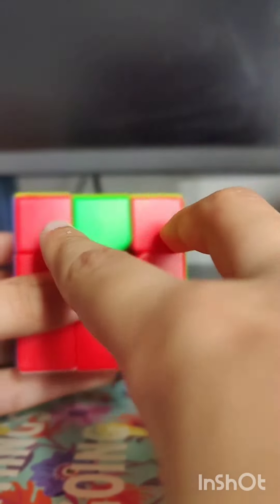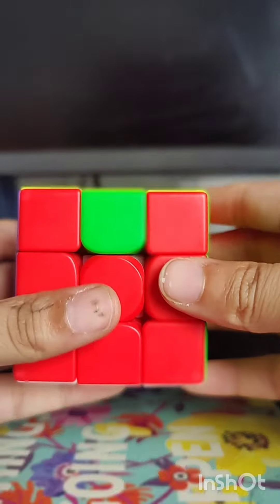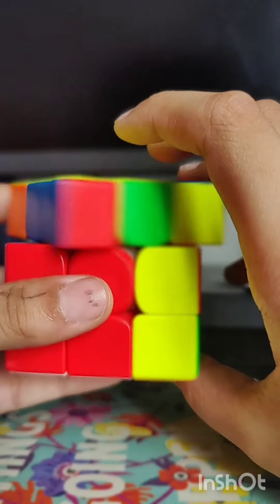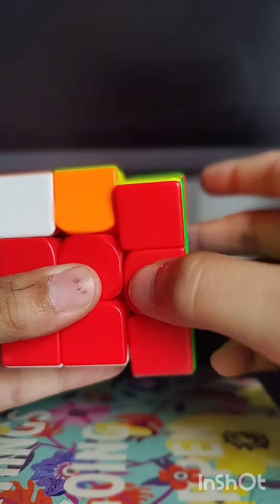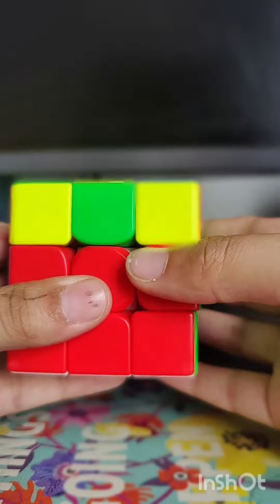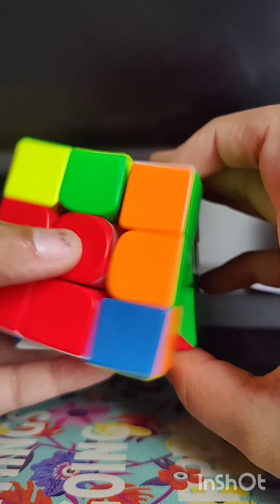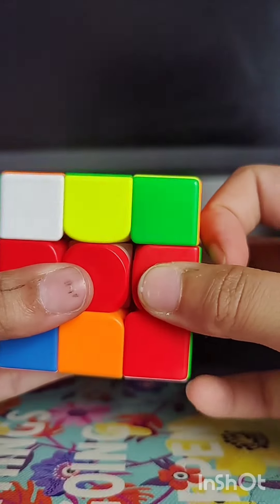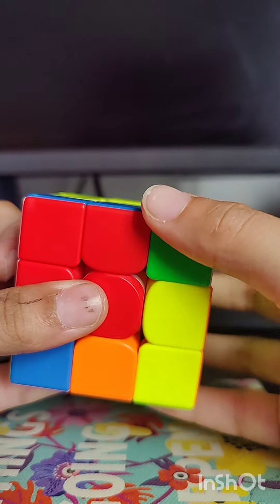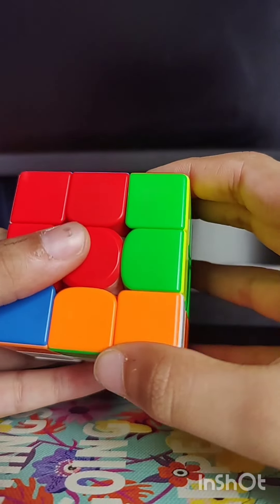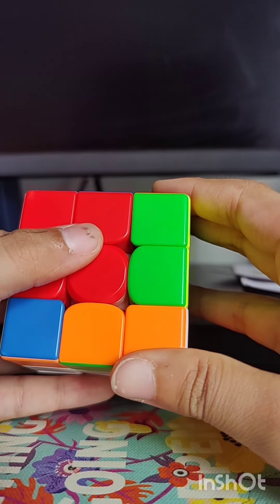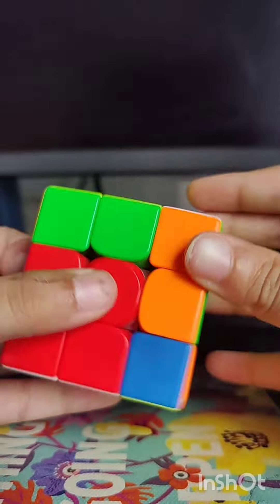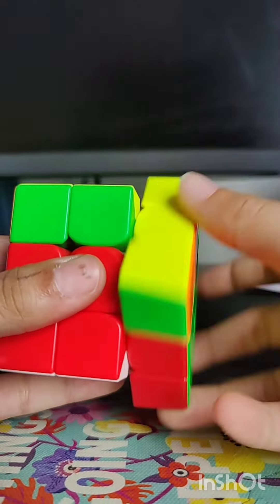This is the RB perm where you have headlights over here and a bar here instead. You have to hold the headlights in front and then do this: R' U2 R U2 R' F R U R' U' R' F' R2.